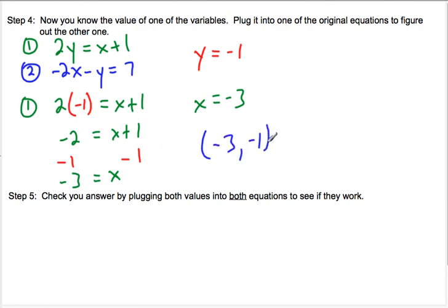And we're done with that step. Now step 5: check your answer by plugging both values into both equations to see if they work. So we have equation 1 here. We have 2 times y equals x plus 1. So negative 2 equals negative 3 plus 1. That works. Check.